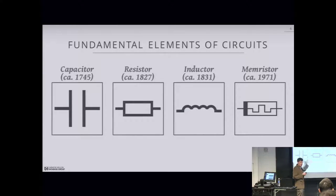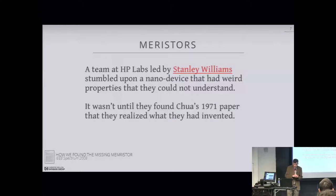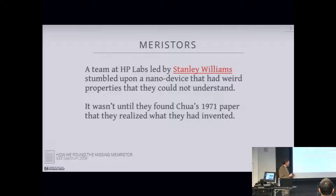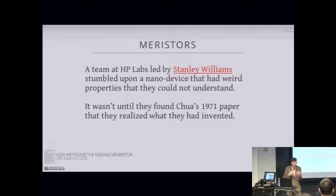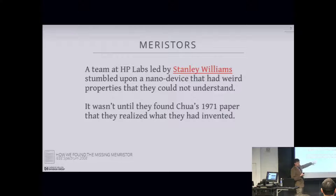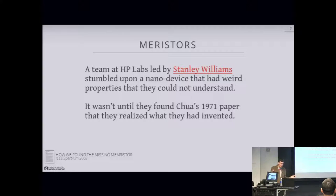He wrote this paper in 1971, it was very theoretical and mathematical, and no one ever read it because no one could understand it. What he was essentially predicting is what we now call the memristor — the fourth element of all fundamental circuits. Then in the early 2000s, a team at HP Labs led by Stanley Williams was trying to do far-reaching research developing low-level nano computing devices that were self-assembling. They created a nano device that had these weird electrical properties they couldn't understand — they didn't know why it was behaving the way it would. They put a voltage in and expected one voltage out, but got something else. After a couple of years, they stumbled upon Chua's 1971 paper and finally realized what they had invented was the memristor.